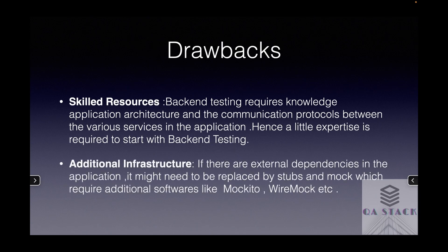The second drawback is additional infrastructure. When it comes to back-end testing, as we are shifting left, certain services may not be available or are chargeable, so we might have to replace them with stubs. These stubs or mock services require additional software — for example, Mockito or WireMock. Hence, if we choose back-end testing, we might have to put some additional effort into handling these stubs and mocks when services are unavailable.